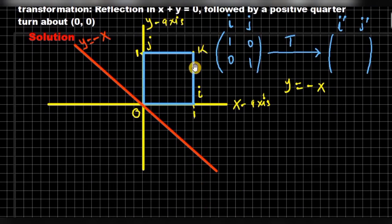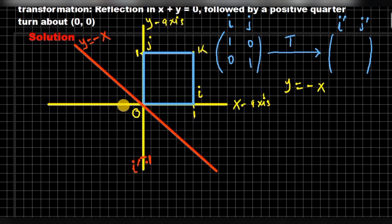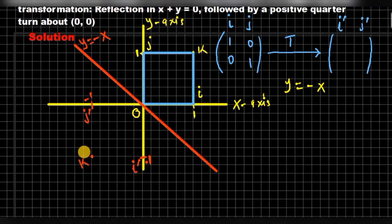We are going to reflect the unit square on this line as instructed, so we are going to reflect point i to this side. When we reflect, we have the image of i here, that is at point (0, -1), and on the other side, this point is also at (-1, 0), so this is where we locate the image of j. For k, we will have it right here — that is the image of k.